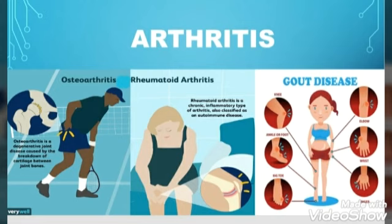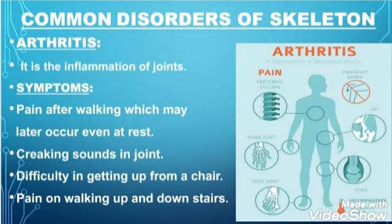The fourth and last skeletal disorder is arthritis. Arthritis is the inflammation of joints and it causes stiffness. Other symptoms of arthritis are: number one, pain after walking which may later occur even at rest; number two, creaking or cracking sounds in the joints; number three, difficulty in getting up from a chair; and number four, pain on walking up and down stairs. You can see in the diagram inflammation and pain in the joints of the vertebral column, hand joint, foot joint, knee joint, and hip joint.